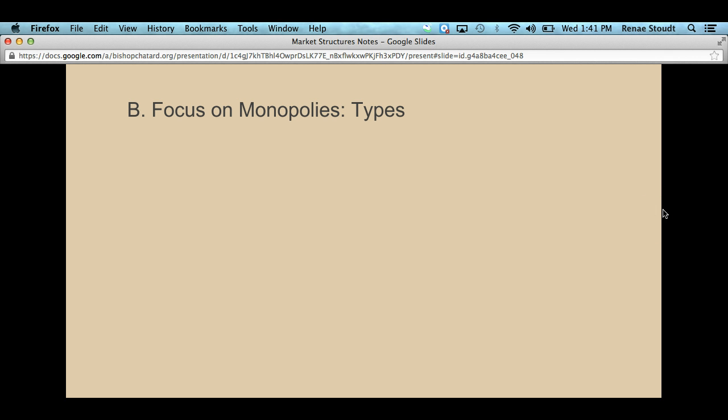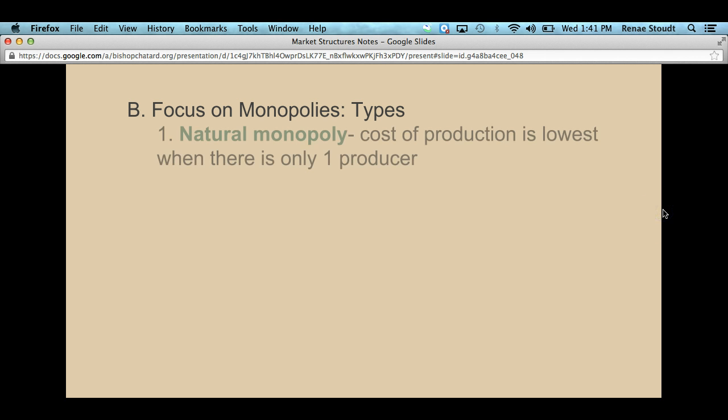The first type of monopoly is what we call a natural monopoly. A natural monopoly is where the cost of production is lower when there's only one producer. What we're saying is that it's cheaper to only have one company make this product.